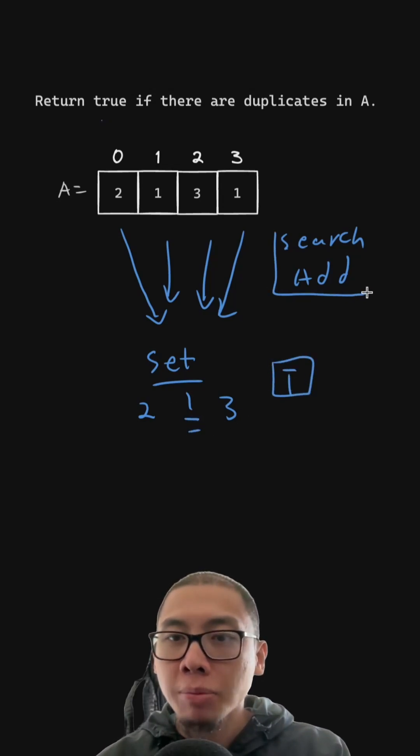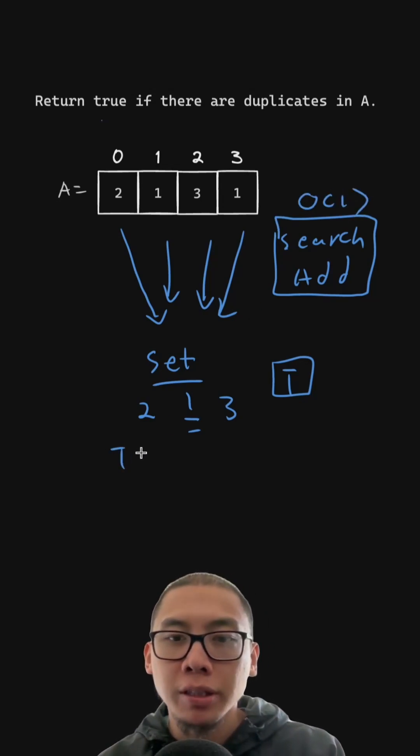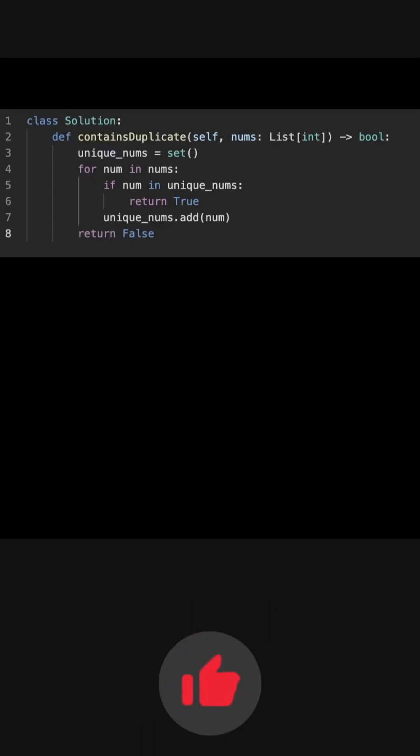The search and add operations in hash set just run in O of 1 time, giving us an overall time complexity of O of n. And here's the Python code. Leave a like if you found this helpful.